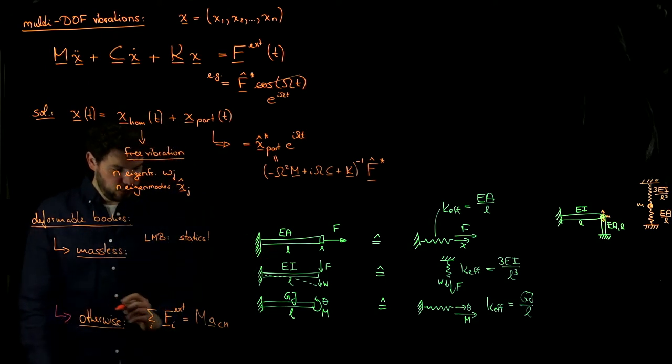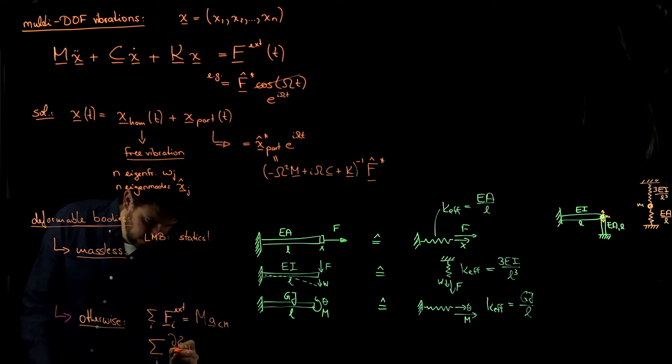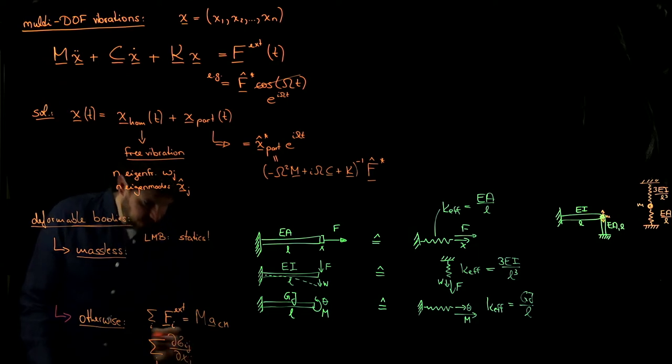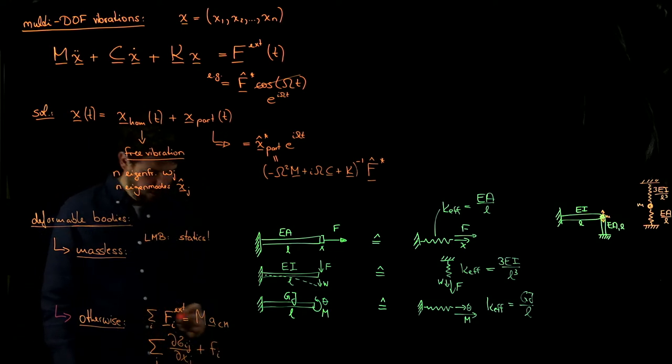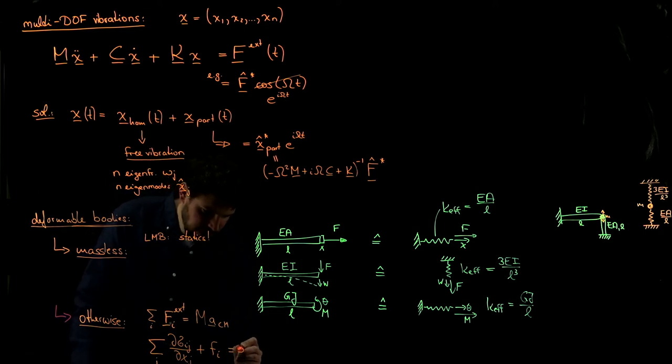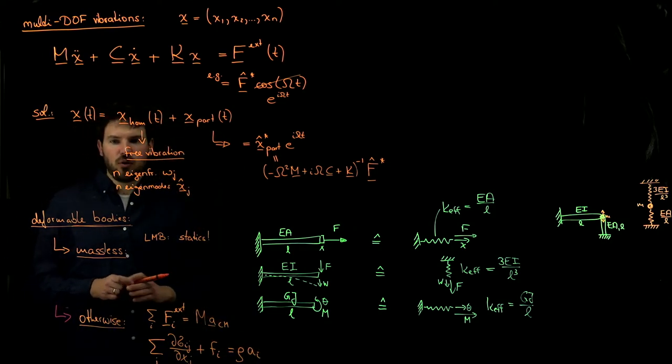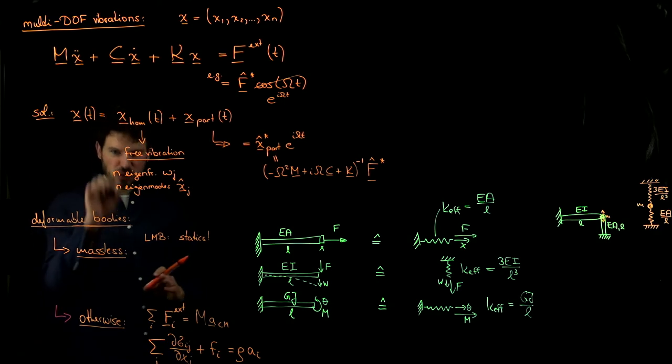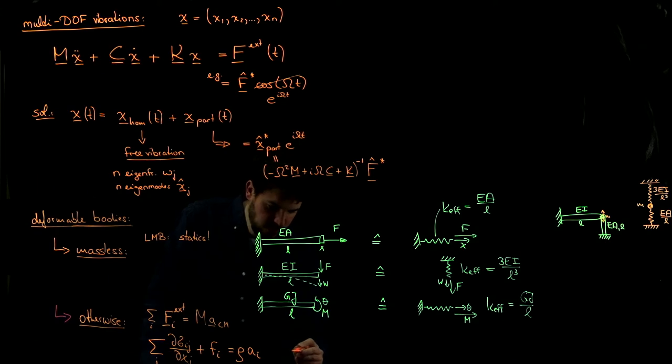But there's also another version, which is a local one. And this tells us that the sum over all j derivative of the stress component sigma ij with respect to xj plus a body force component in the ith direction equals the mass density rho times the acceleration a in the ith direction. And this is the local form of linear momentum balance, which must hold at every point inside a deformable body.